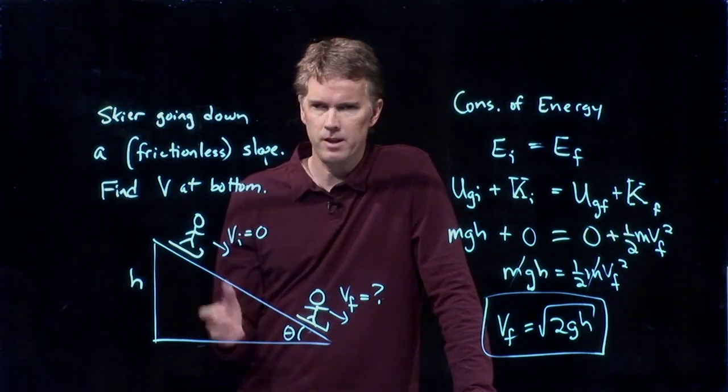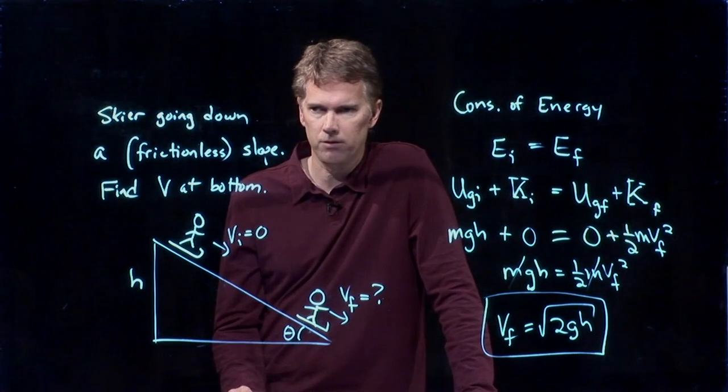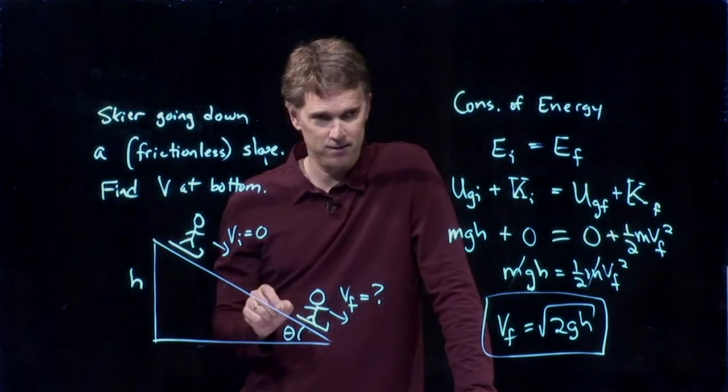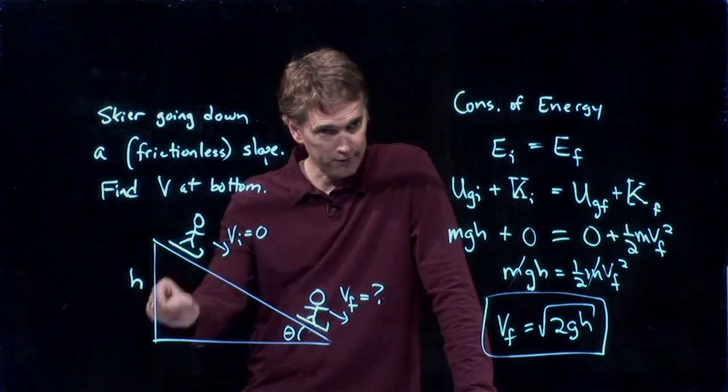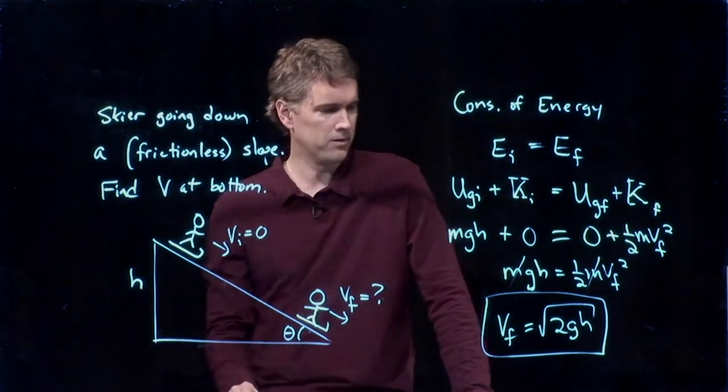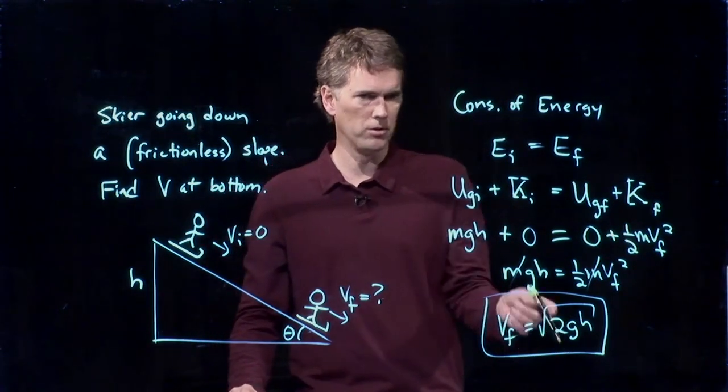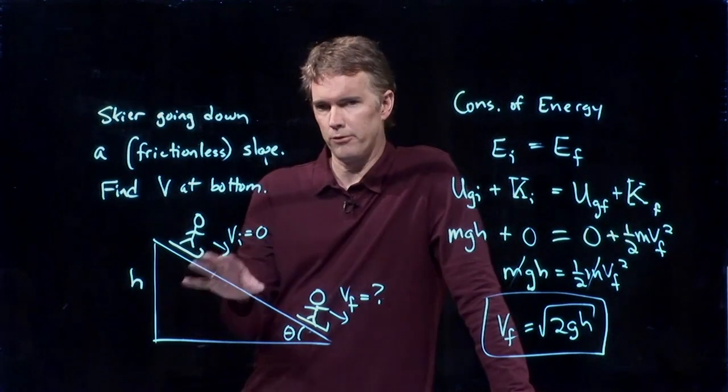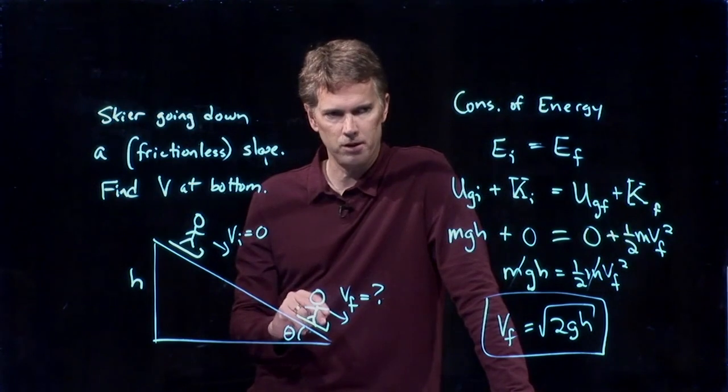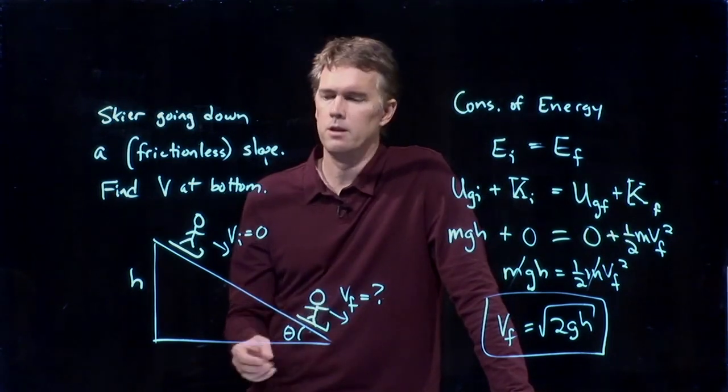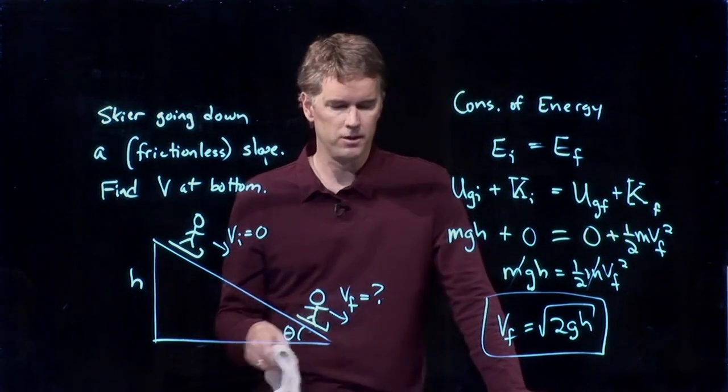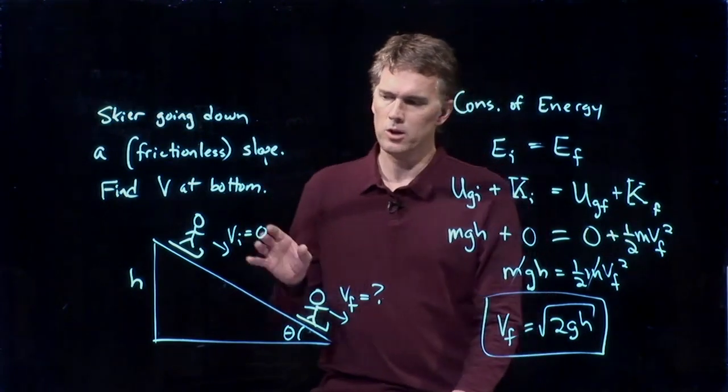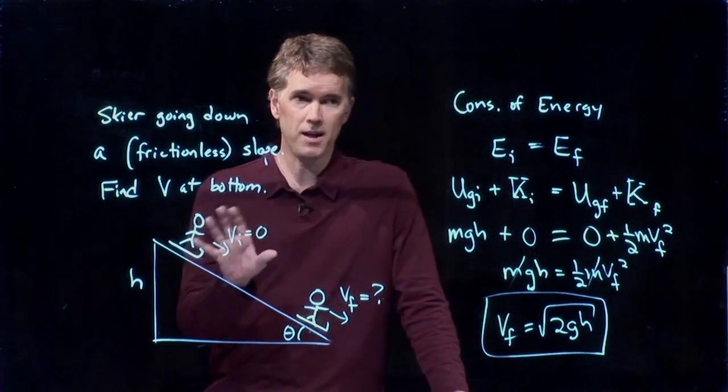In fact, the hill is irrelevant in this case. If you dropped the skier straight down from the top of the hill, how fast would they be going right before they hit the ground? This right here. Square root of 2gh. Now in the real world of course, friction comes into it. And friction is therefore important in this problem. So let's take a look at it again, but let's add some friction.